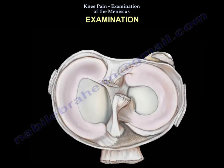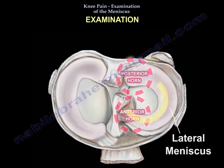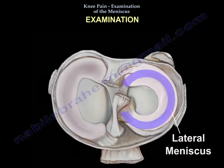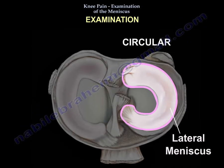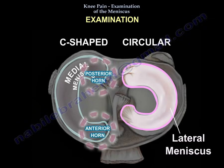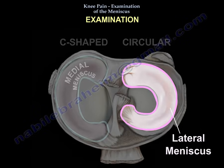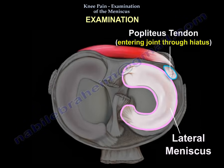Sometimes in an exam you may be shown a picture of the lateral meniscus. You can see part of the anterior and posterior meniscus in the same view because the lateral meniscus is circular, while the medial meniscus is C-shaped. So you can see either the anterior horn or the posterior horn but not both at the same time in the same view. You can also find the popliteal tendon there — that identifies the lateral meniscus.